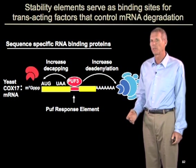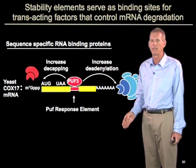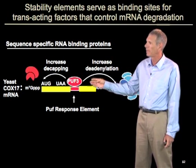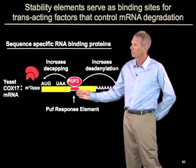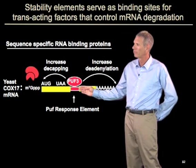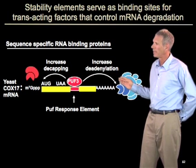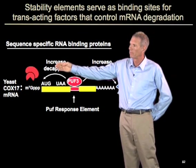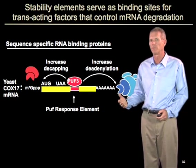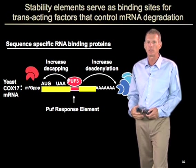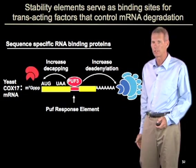Many of these stability elements serve as binding sites for proteins or microRNAs that then control RNA degradation. For example, the PUF3 protein binds to a short sequence element in the 3' ends of yeast mRNAs. When it does so, it recruits the CCR4 deadenylase complex and subsequently can also increase the rate of decapping of that message. This is a general principle for many instability elements — they recruit trans-acting factors that directly or indirectly promote degradation of the message.